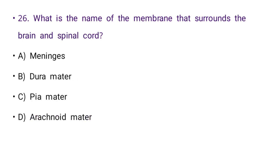Next: What is the name of the membrane that surrounds the brain and spinal cord? Options: meninges, dura mater, pia mater, or arachnoid mater. The right answer is A: meninges.